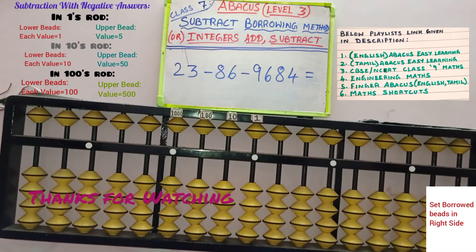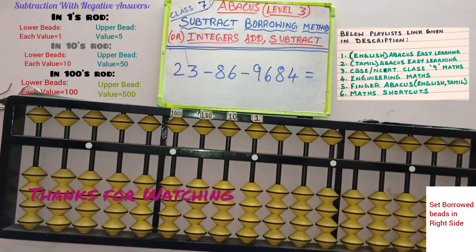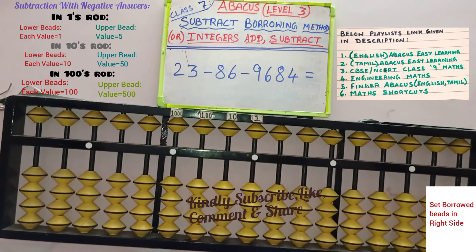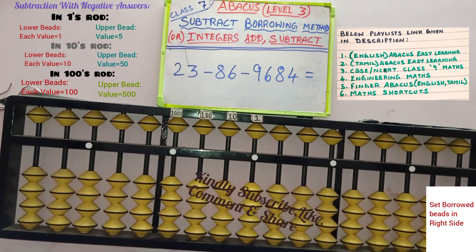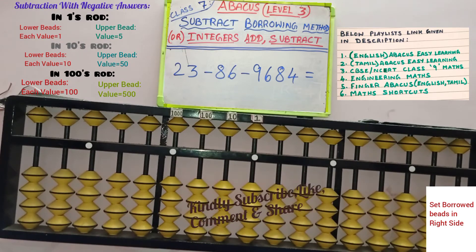Hello friends, we are in Level 3, Class 7 in Abacus. Here we are going to see subtraction with negative answers, and we can also say it as integers on Abacus.